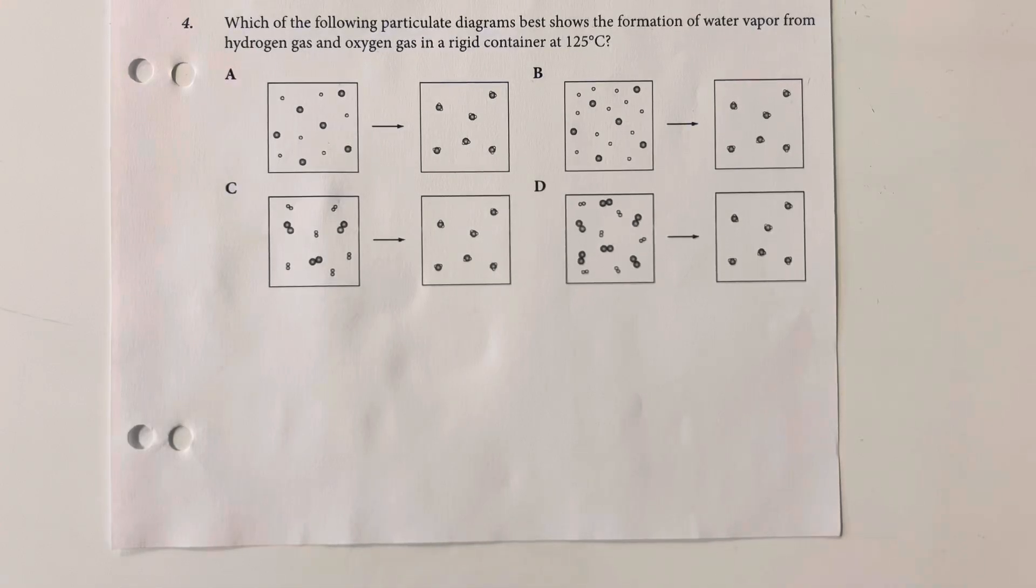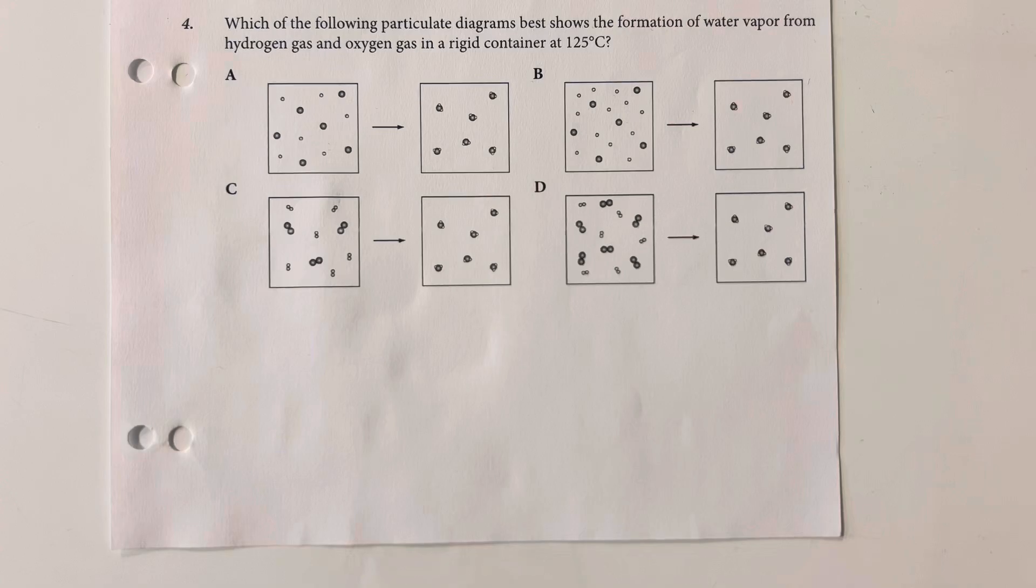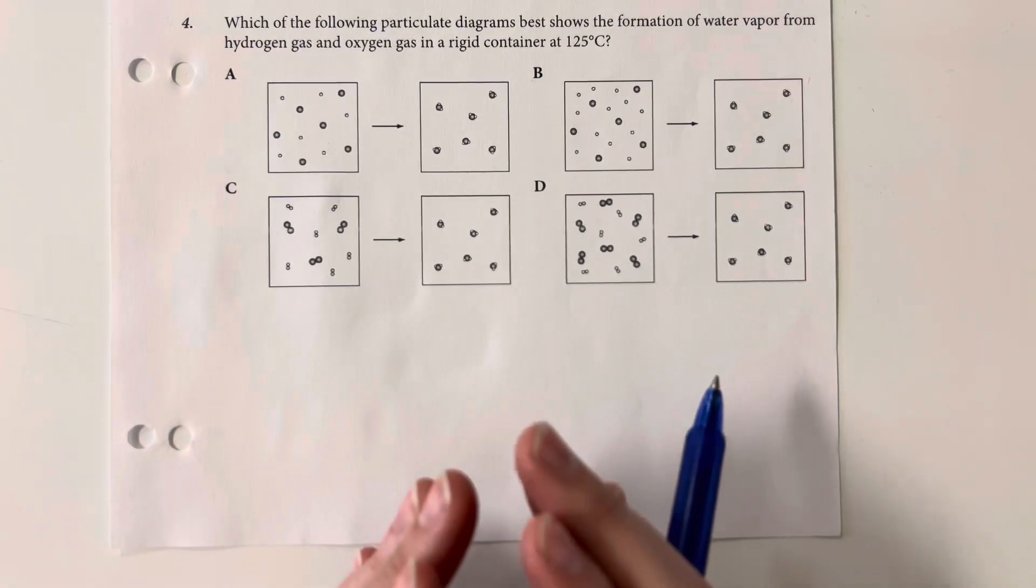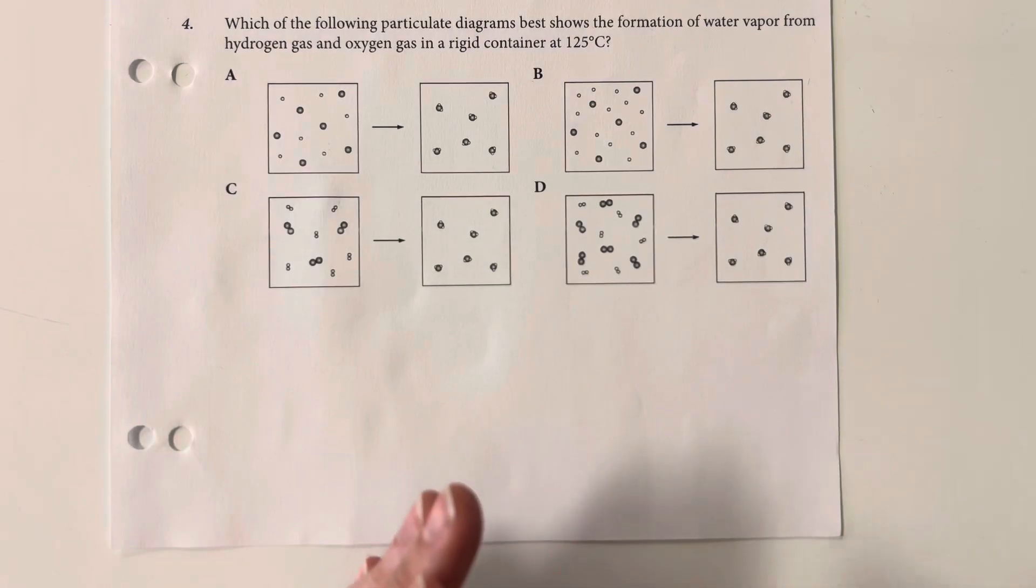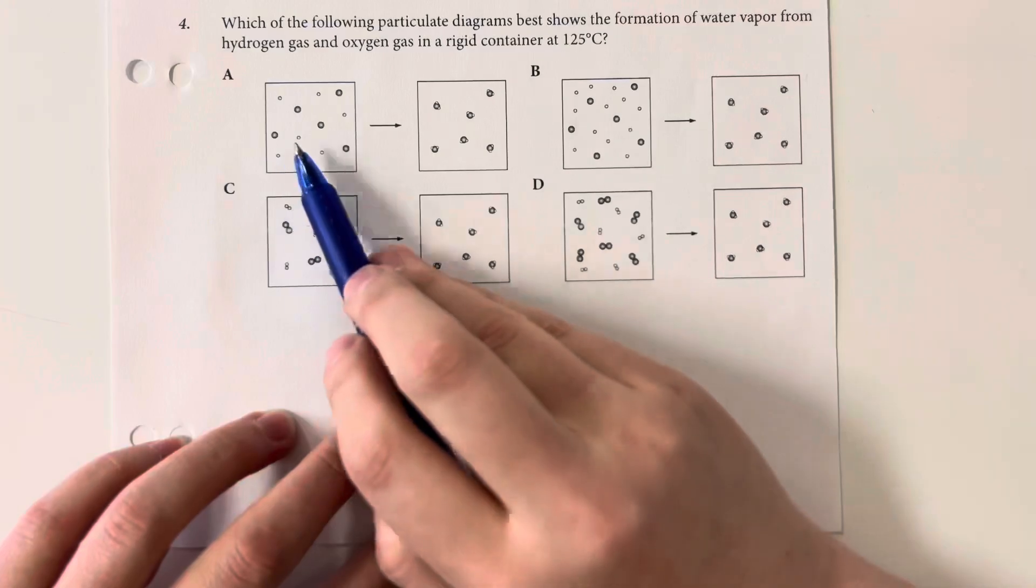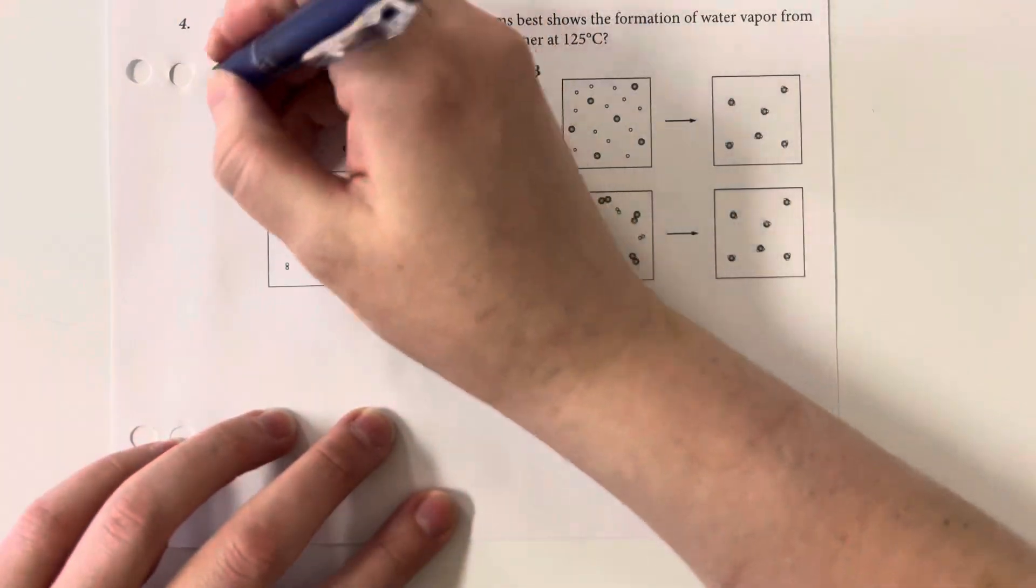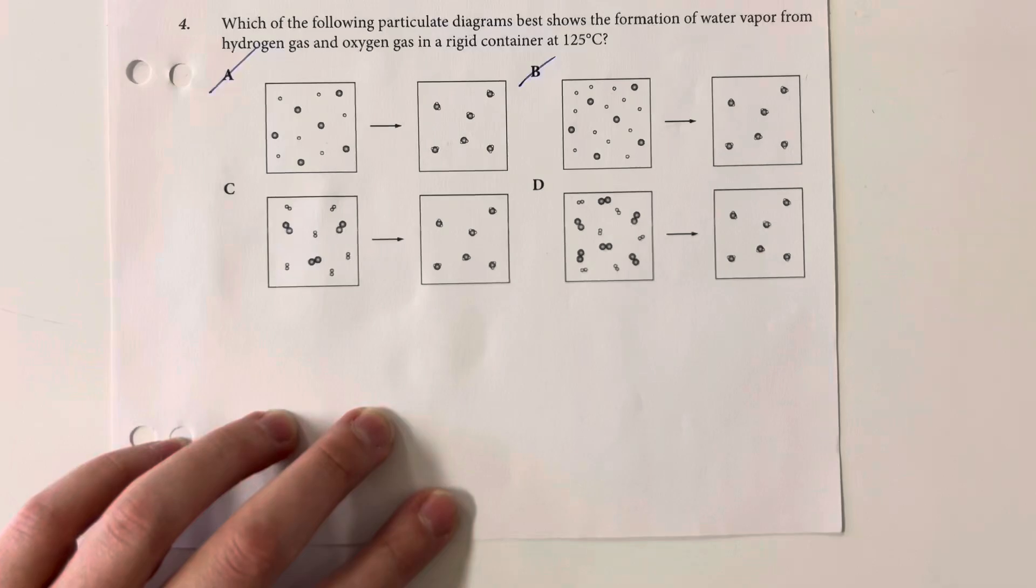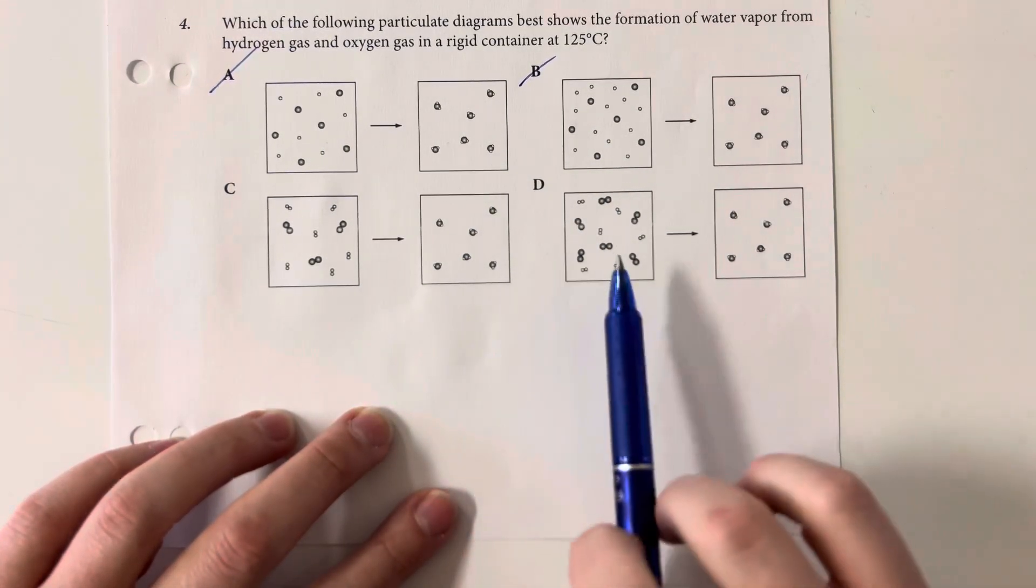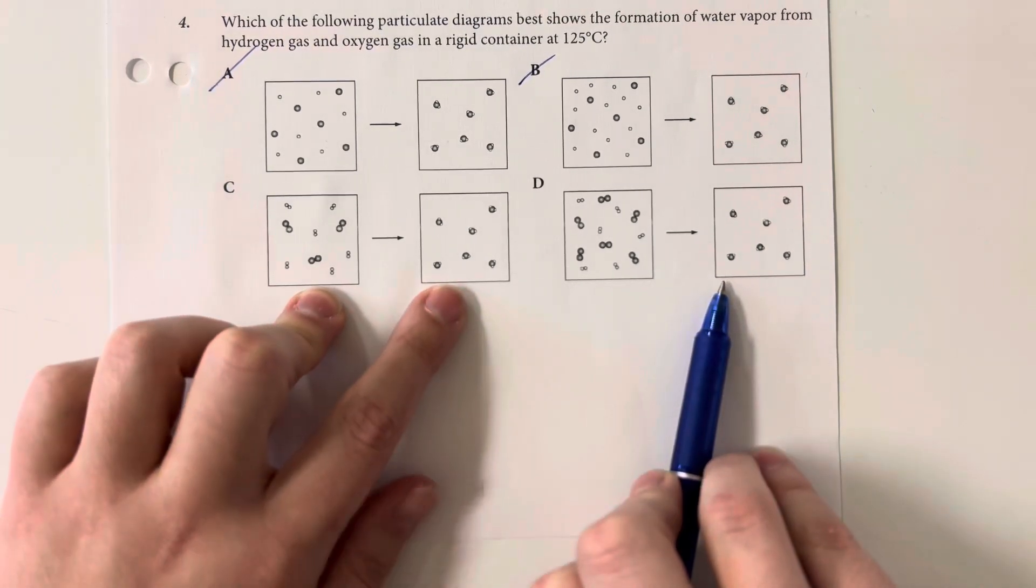Which of the following particulate diagrams best shows the formation of water vapor from hydrogen gas and oxygen gas in a rigid container at 125 degrees Celsius? So I should see hydrogen gas and oxygen gas. Hydrogen and oxygen gases are both diatomic, so my initial particle diagram should be showing diatomic molecules. I don't see diatomics in A or in B, so I am left with two diatomics here and then going to water.